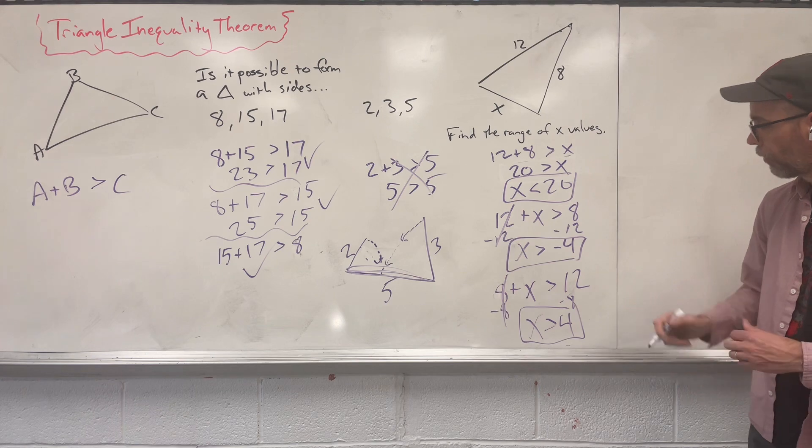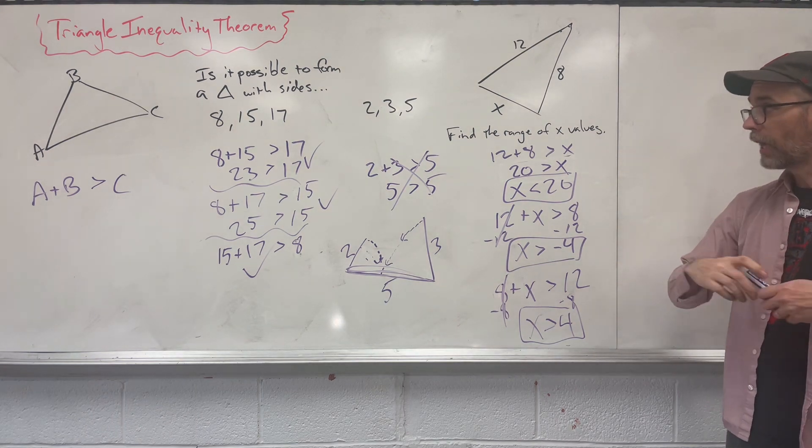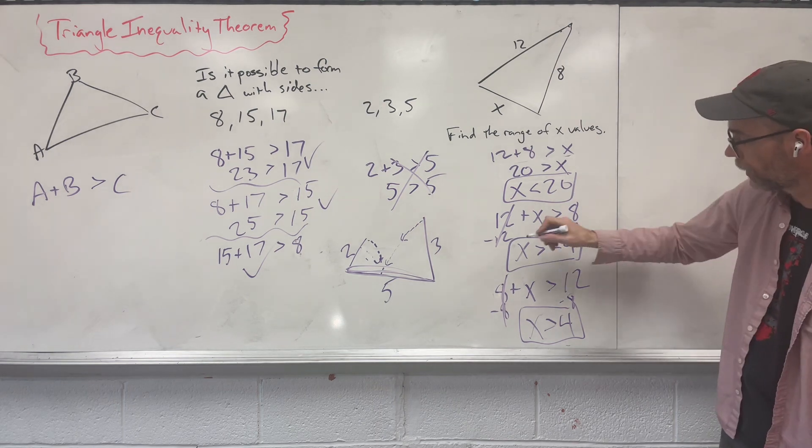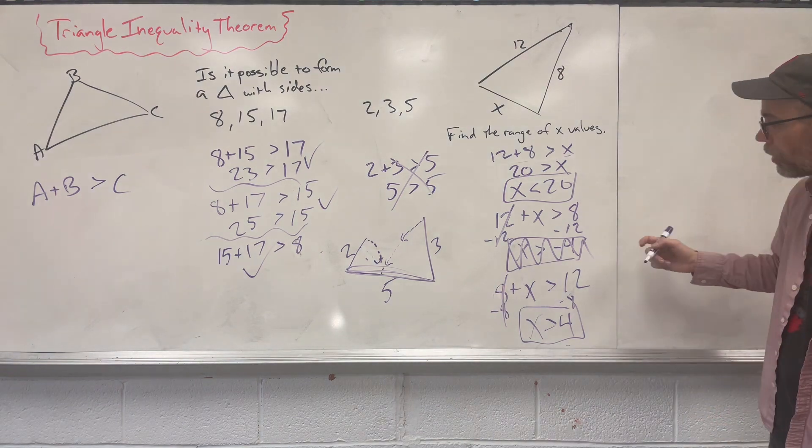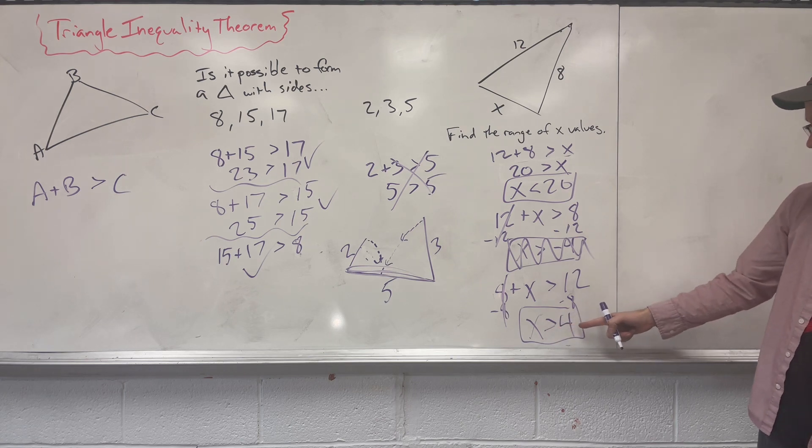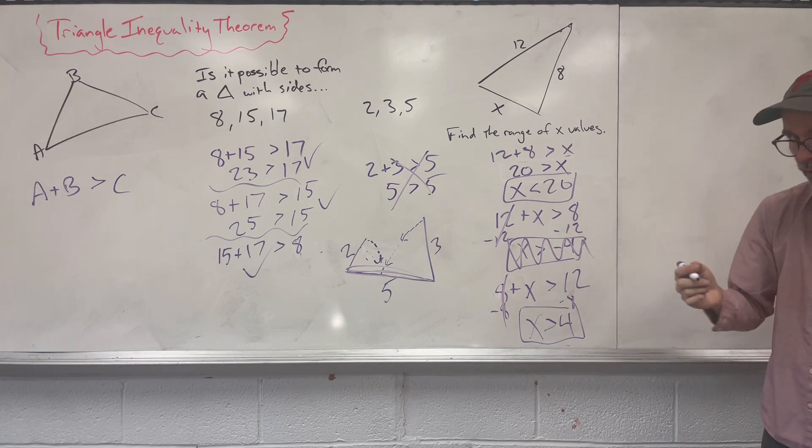Okay, so we have three options here: 20, negative 4, and 4. First off, you can't have a length of a triangle be a negative number, so automatically that's not it. So what are we looking for in this case? We're looking for a number that is smaller than 20 but is greater than 4.